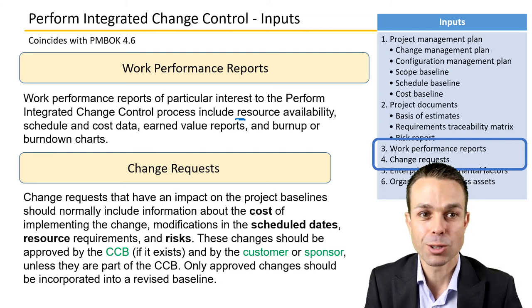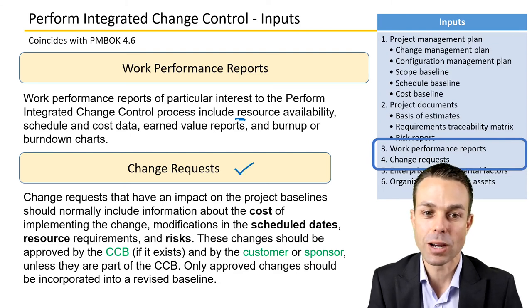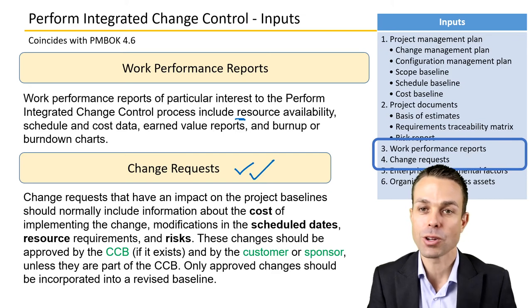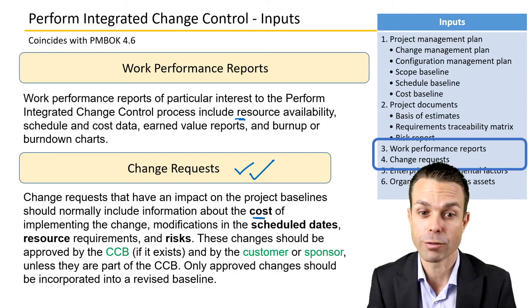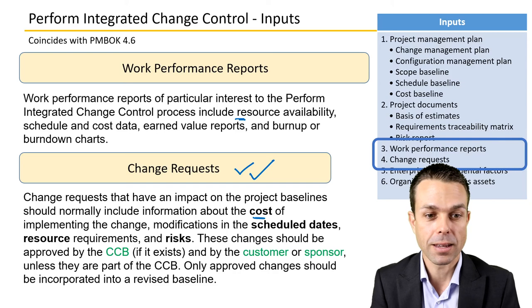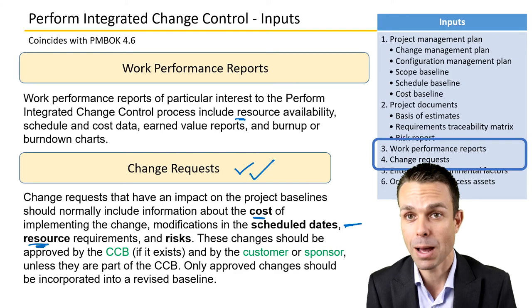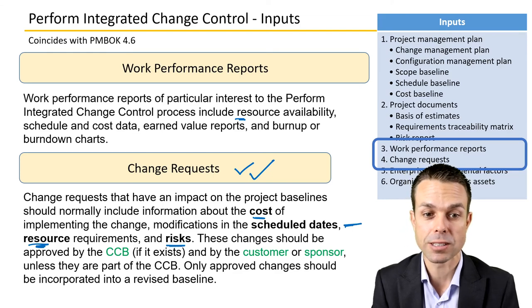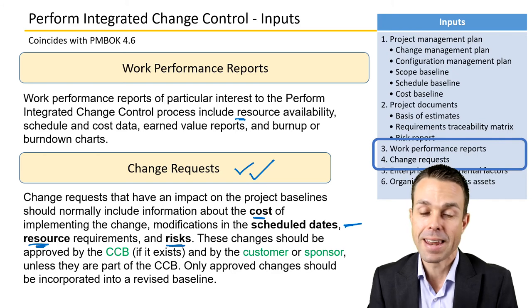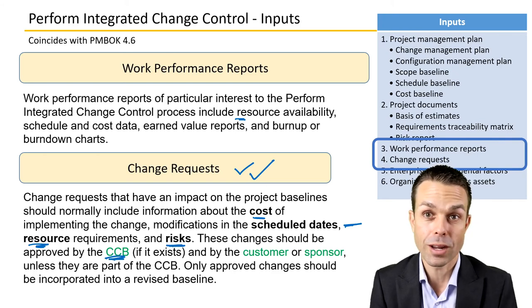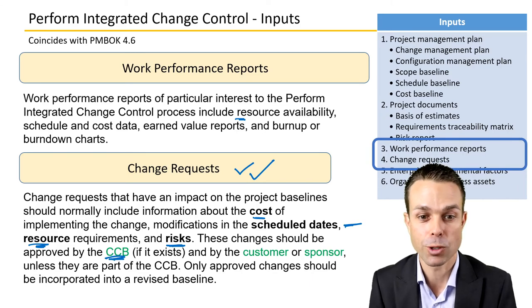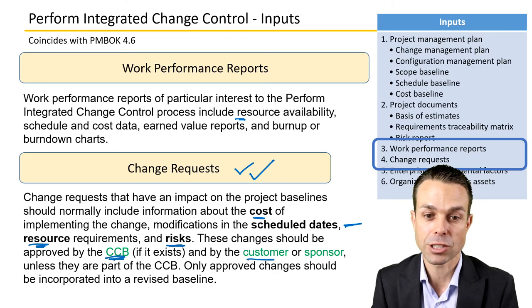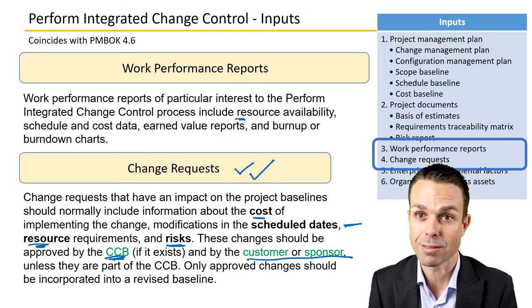The big input into Perform Integrated Change Control are the change requests themselves. They will have an impact on all project baselines and should normally include information about the cost of implementing the change, any modifications to scheduled dates, any resource requirements resulting from the change, and risks that have been considered. The change request needs to be approved by the change control board if you have one — each project is different — but it definitely needs approval by the customer or sponsor unless they're part of the CCB itself.